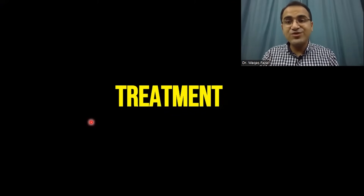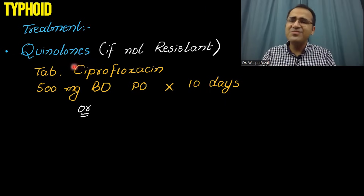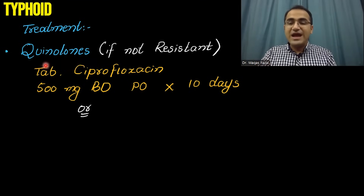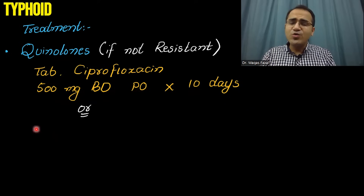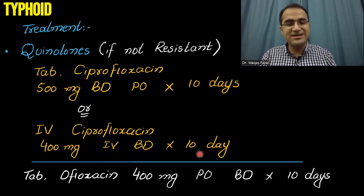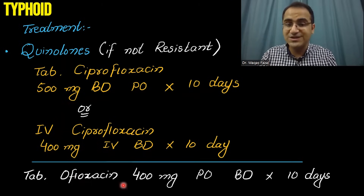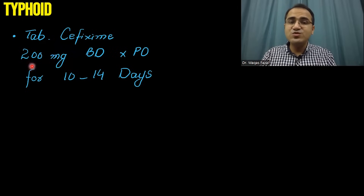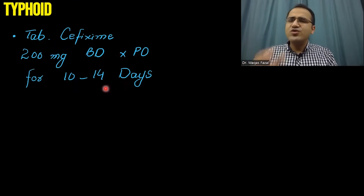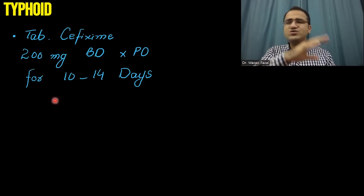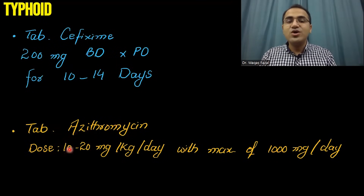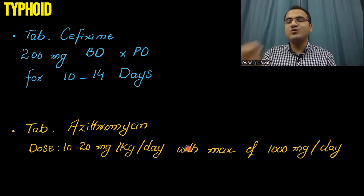In the treatment of typhoid fever, quinolones are the most important ones, though many strains of Salmonella are now resistant. If quinolones are used, you can use tablet ciprofloxacin 500 mg BD orally for 10 days, or IV ciprofloxacin 400 mg IV BD for 10 days. You can also use ofloxacin 400 mg orally BD for 10 days. Other options include third-generation cephalosporins like cefixime 200 mg BD orally for 10–14 days. If quinolone-resistant, you can use azithromycin 10–20 mg/kg/day with a maximum dose of 1000 mg per day.